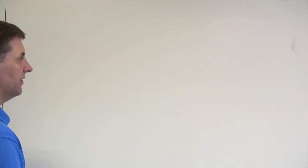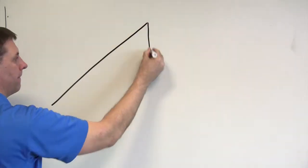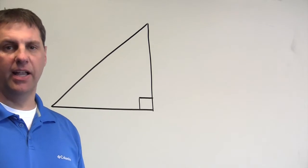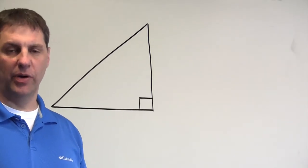To better understand these trigonometric ratios, it's important to know which sides are adjacent, which are opposite, and which is the hypotenuse. Drawing a picture helps. For this section, we're only talking about right triangles.